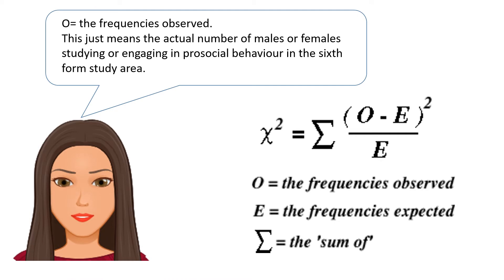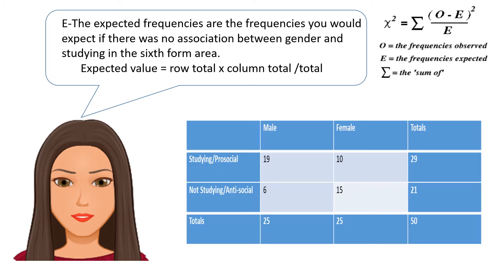O in the equation refers to the frequencies observed. In the case of the data I've already shown you, this just means the actual number of males or females studying or engaging in pro-social behaviour in the sixth form study area. E is the expected frequencies — these are the frequencies you would expect if there was no association between gender and studying in the sixth form area. We work out the expected frequencies by doing the row total times the column total divided by the overall total.